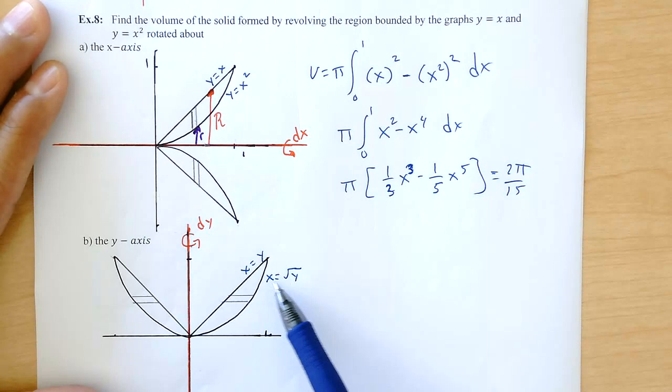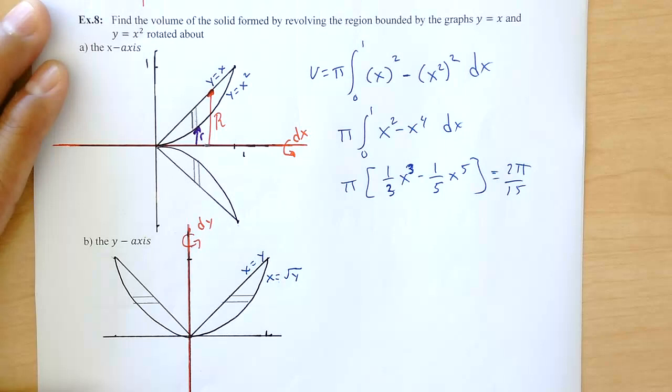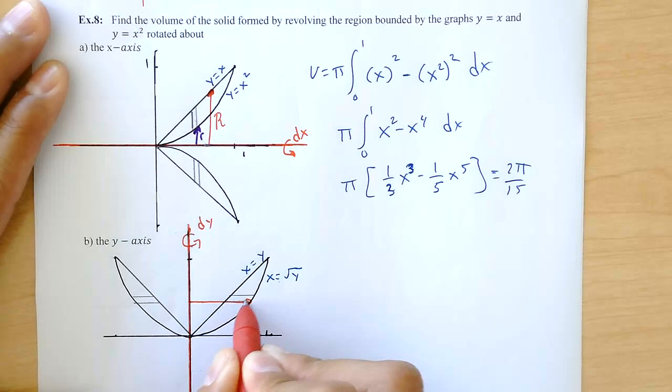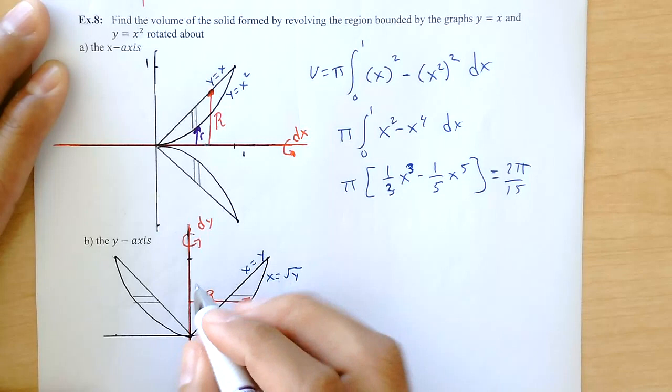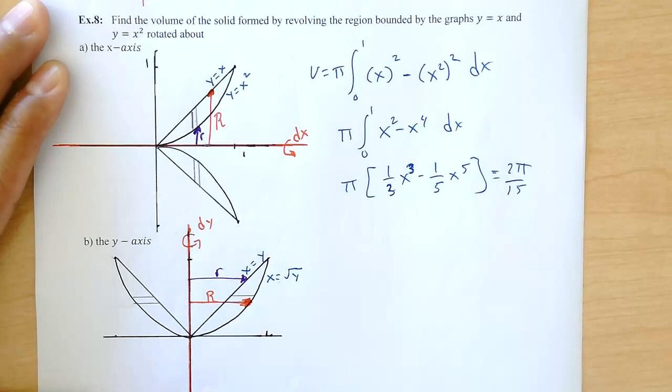And everything has to be in terms of y. So the big radius goes from there to there, I'll call that big radius big R. And the little radius goes from the axis of revolution to the first curve that it hits, which is that one. I'm gonna call that little r. Big R is the square root of y, little r is y.